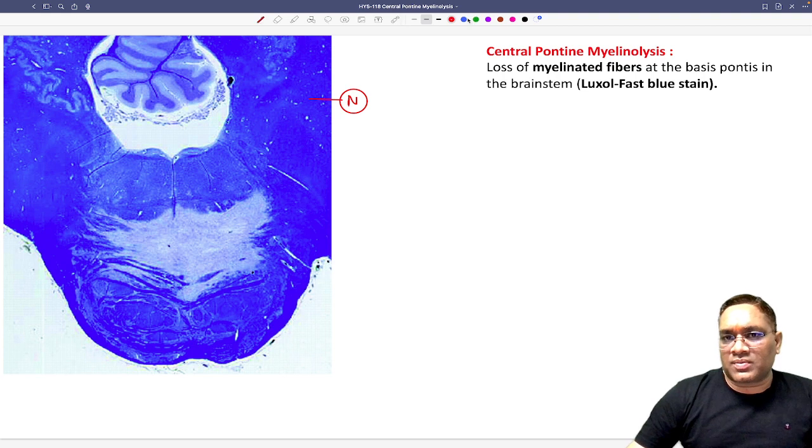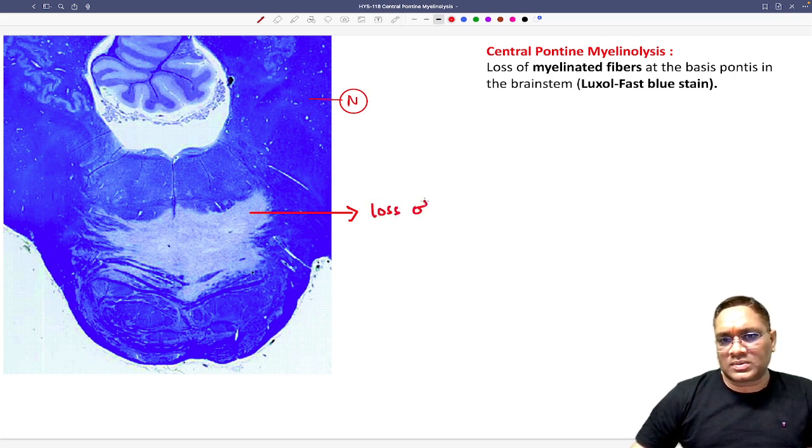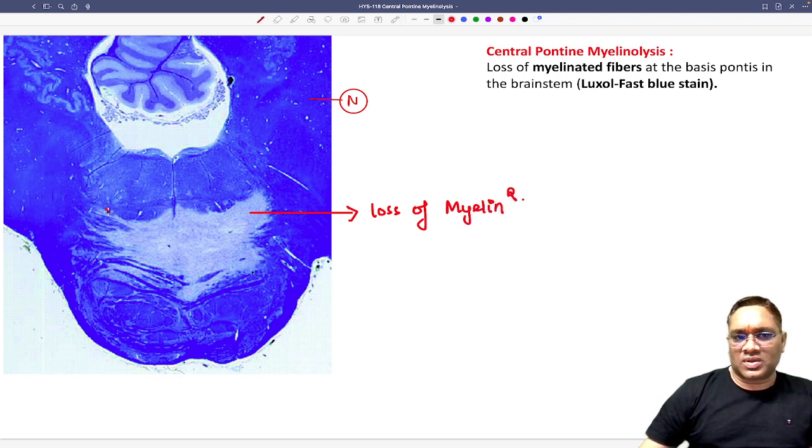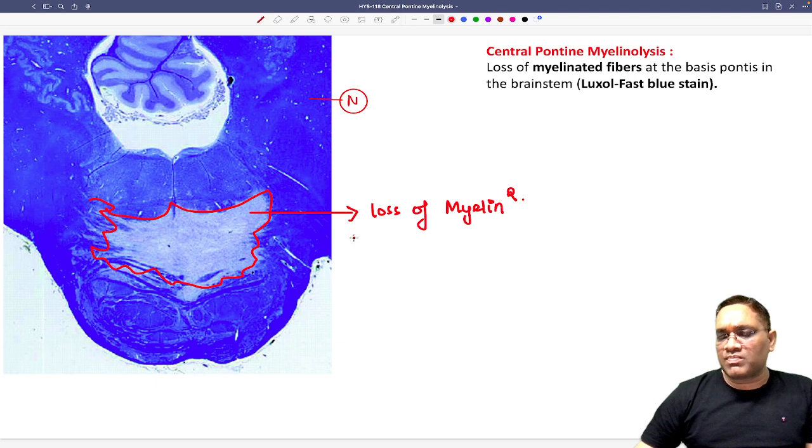But when you will look at the area of the damage, so this is the area of the damage. So this is called loss of myelin fiber. So here we can see that there is a loss of myelin fiber. So now you can see this area is the loss of myelin fiber which I am drawing here, which is looking pale blue color.